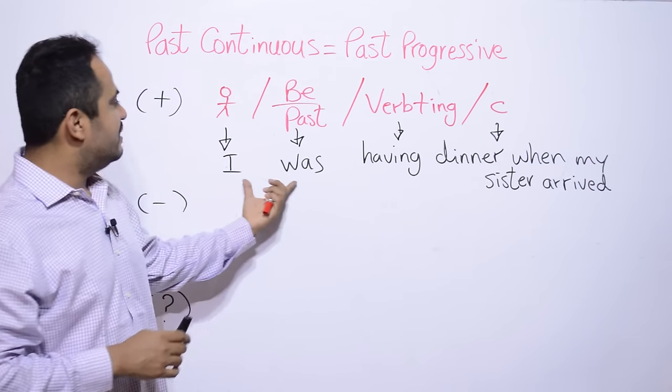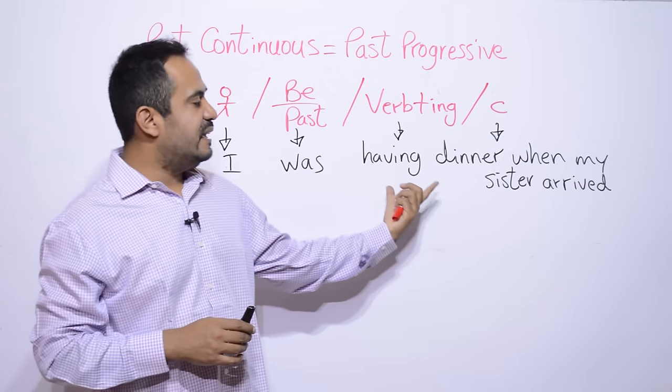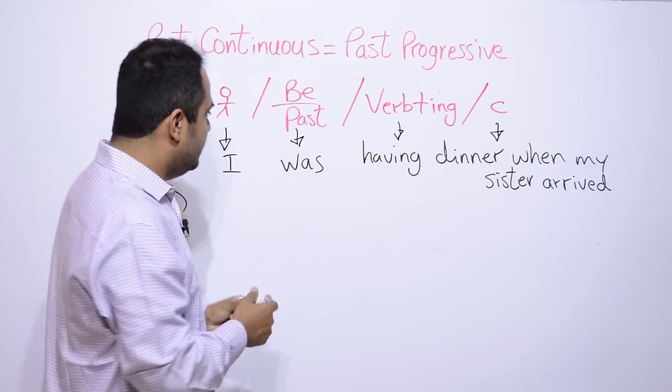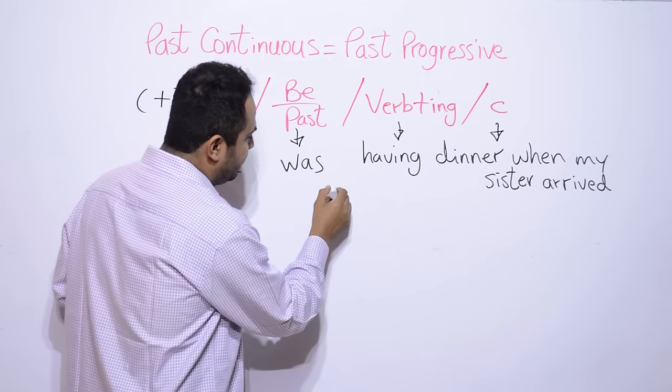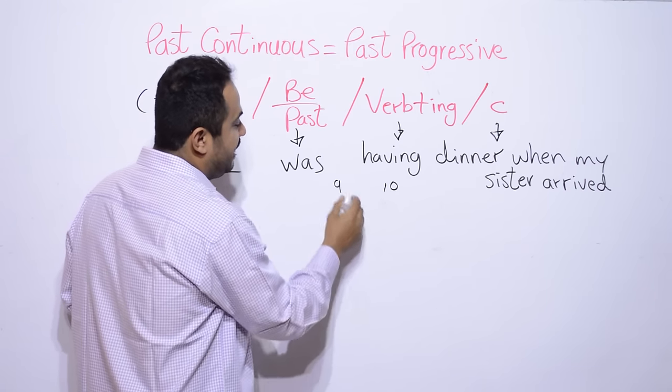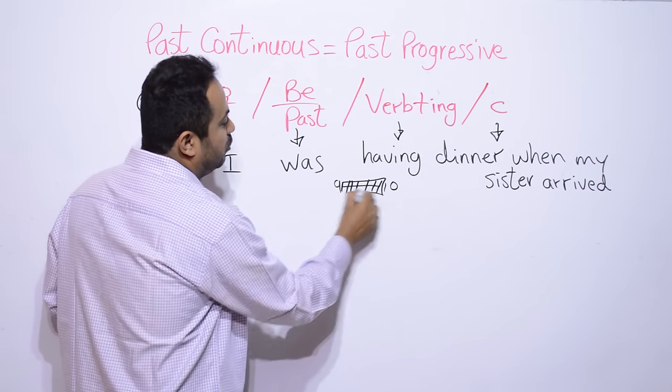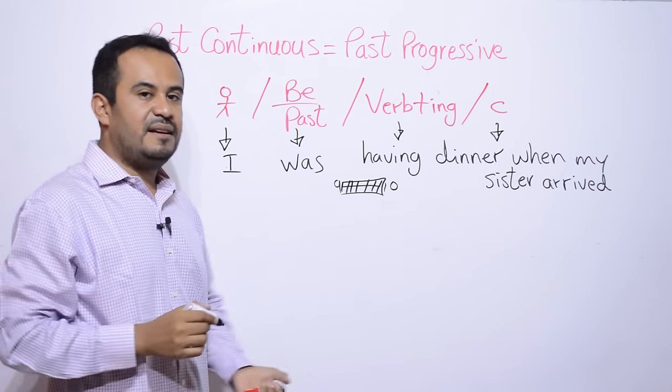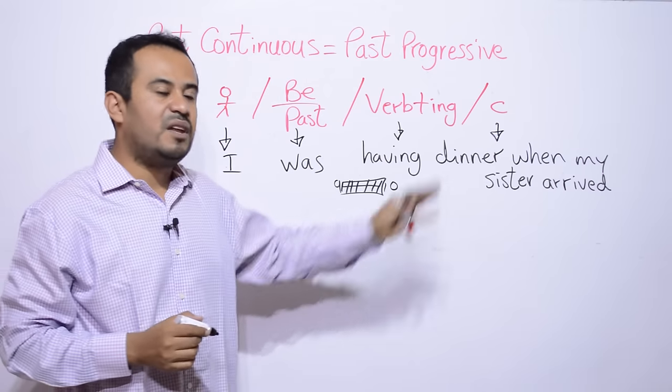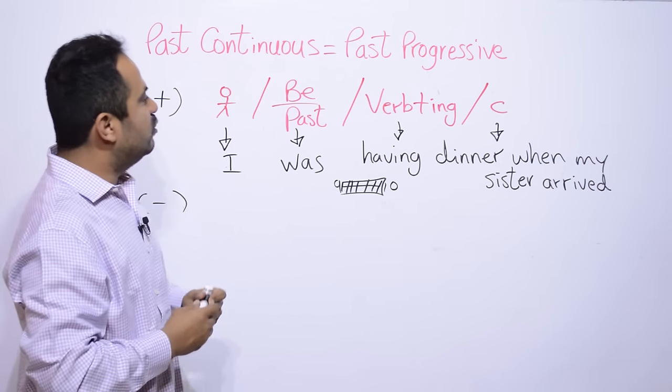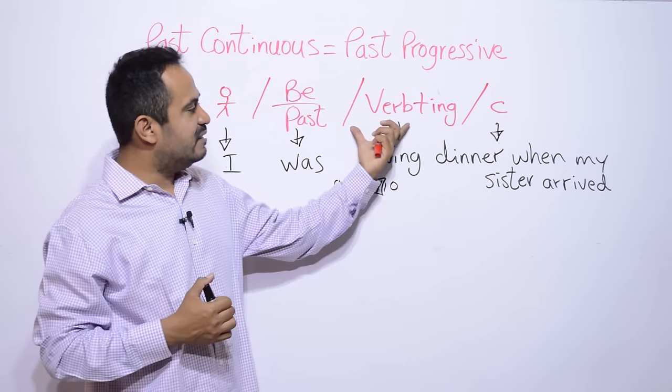Entonces, I was having dinner when my sister arrived. Aquí tenemos, estaba cenando cuando mi hermana llegó. A lo mejor yo estuve cenando de 9 p.m. a 10 p.m. ¿Sí? Fue un evento que tuvo una duración de una hora, el momento en el que yo estuve cenando. ¿Ok?